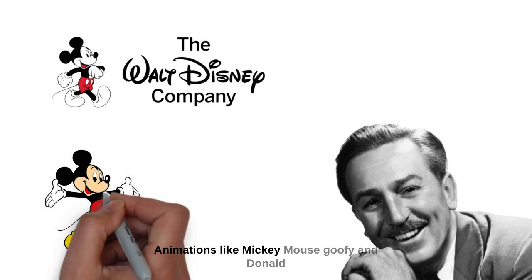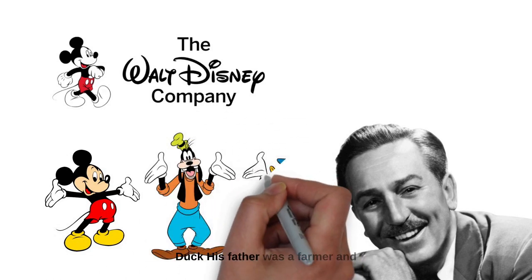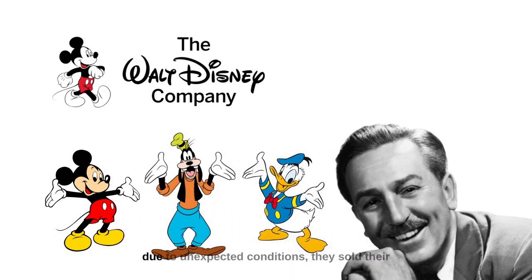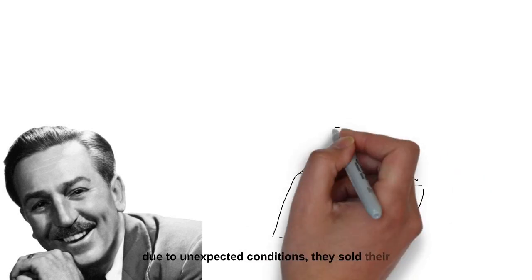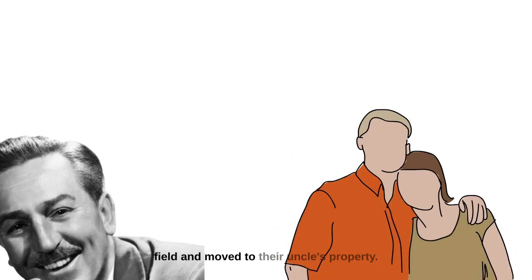Animations like Mickey Mouse, Goofy, and Donald Duck. His father was a farmer and due to unexpected conditions, they sold their field and moved to their uncle's property.